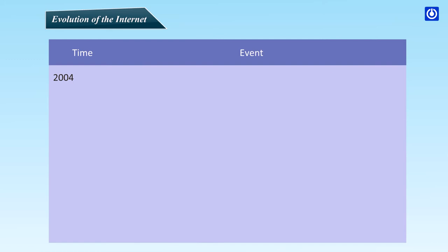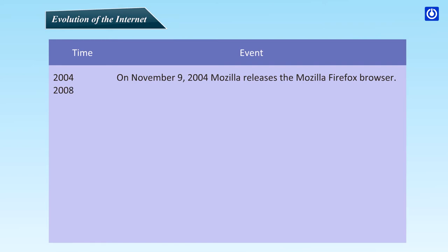2004: On November 9, 2004, Mozilla releases the Mozilla Firefox browser. 2008: On December 11, 2008, Google comes up with Google Chrome.